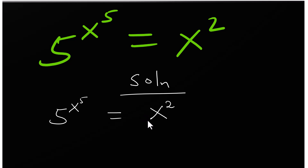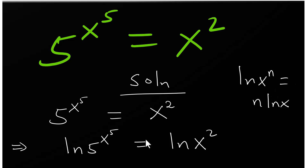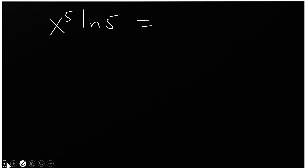First, let's bring the powers down by taking the natural log of both sides. So we introduce ln of 5^x equals ln of x squared. When you have ln of x to the power n, the power comes down, so that becomes x to the power 5 times ln 5. Similarly, the 2 comes down giving 2 ln of x.